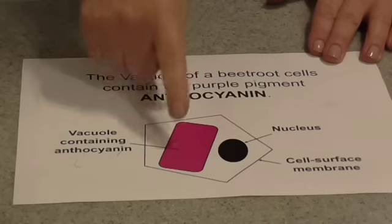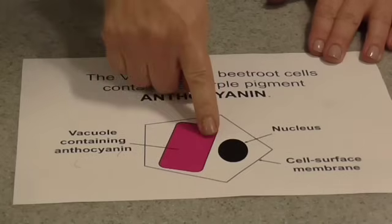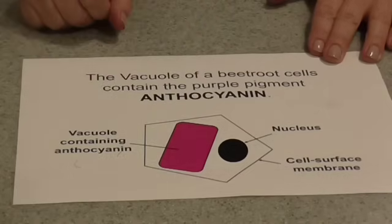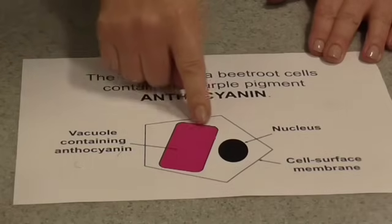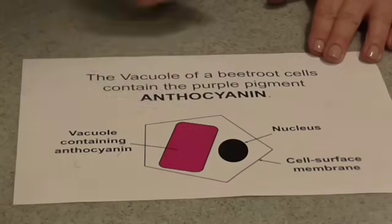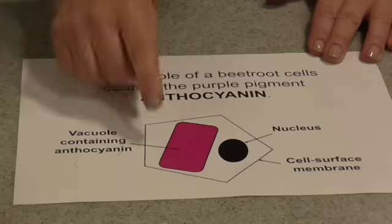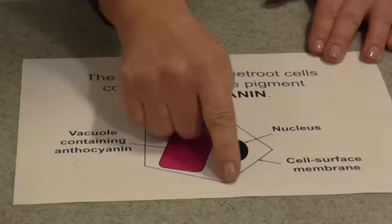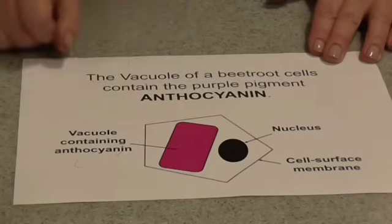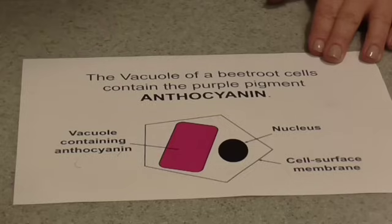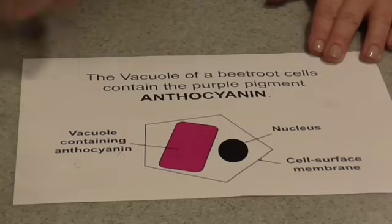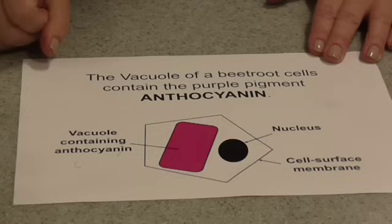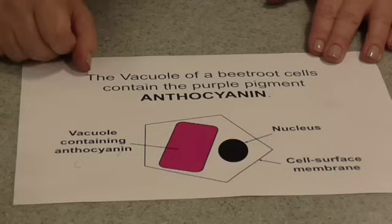The anthocyanin is actually contained within the vacuole of the beetroot cell. So in order to escape from the cell, the anthocyanin must first pass through the membrane of the vacuole — in other words, the tonoplast — and then through the cell surface membrane. In a normal, healthy beetroot cell, this can't happen because anthocyanin is quite a large molecule; it's unable to escape through the membrane.